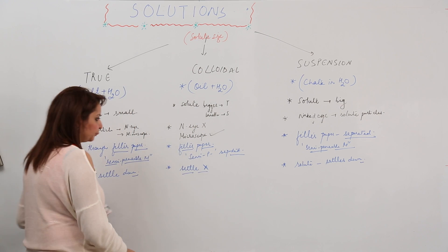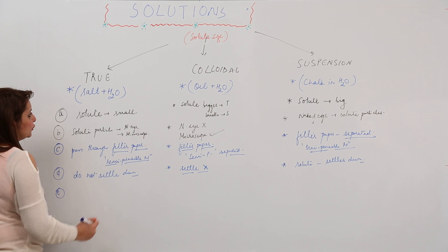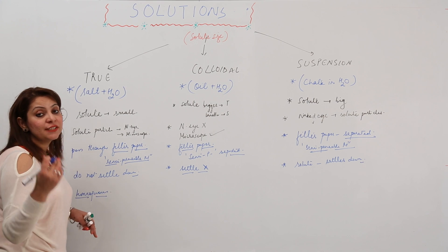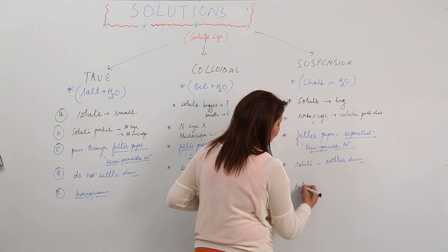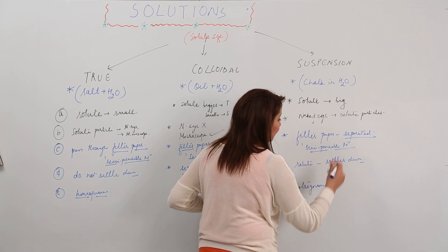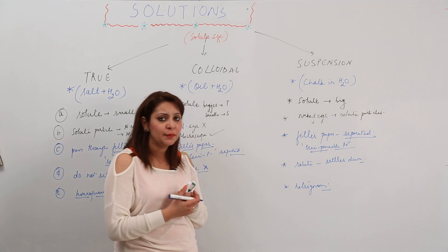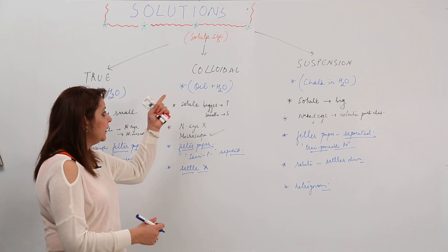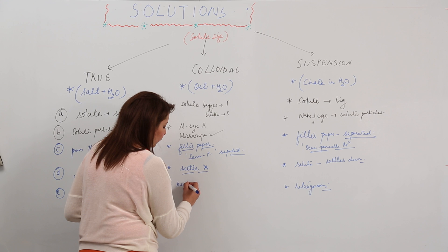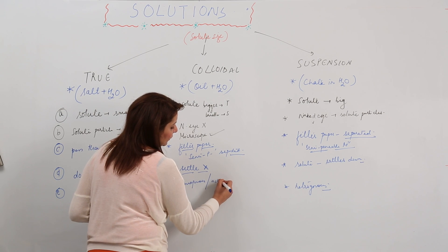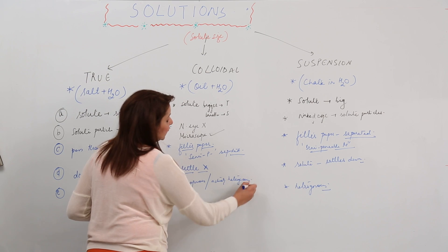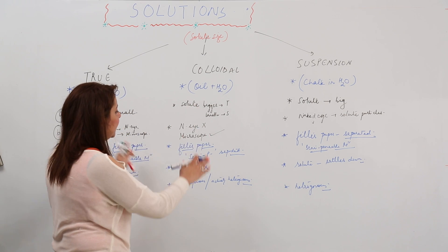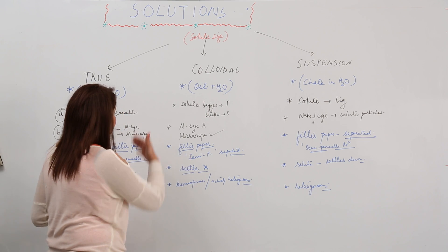Regarding the nature of the solution: a true solution is homogeneous because it has definite composition and properties throughout — we do not see different phases. Suspension is heterogeneous because the large solute particles and solvent particles exist in different phases, visible to us. Colloids appear to be homogeneous but are actually heterogeneous, because under a microscope you can see the particles separated in different phases.